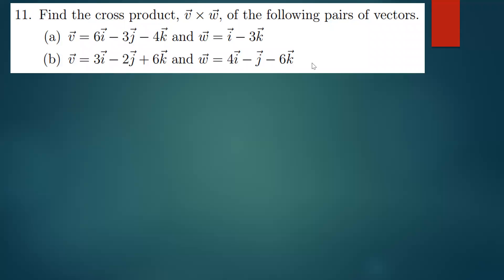This question is asking us to find the cross product between v and w. The question says: find the cross product v times w of the following pairs of vectors. When dealing with the cross product, one thing you have to understand is that the solution is simply found by using the determinant of a three-by-three matrix that you create using the given vectors.